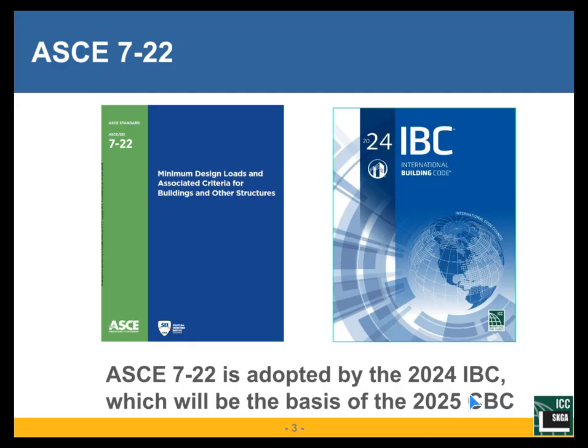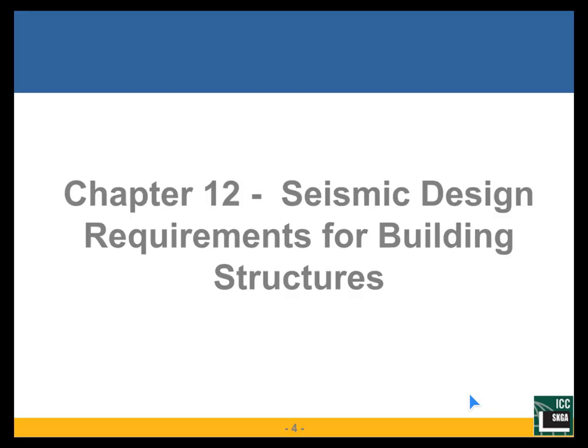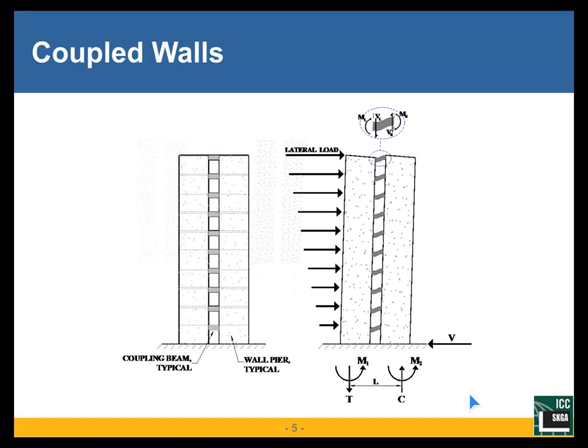As I mentioned last time, the changes are so numerous and some of them are so important that it is not too soon to try to understand the new ways you may have to do things. So, Chapter 12 — Seismic Design Requirements for Building Structures — that's the official title of the chapter.